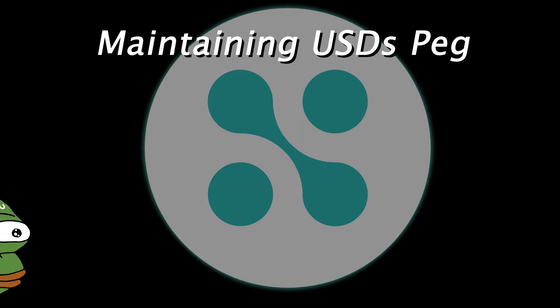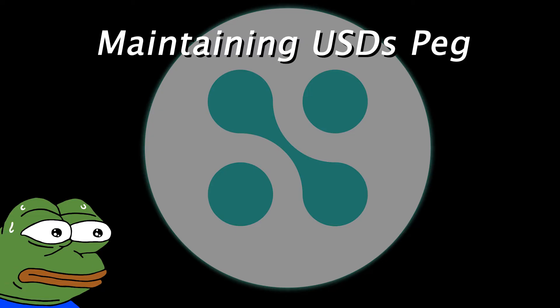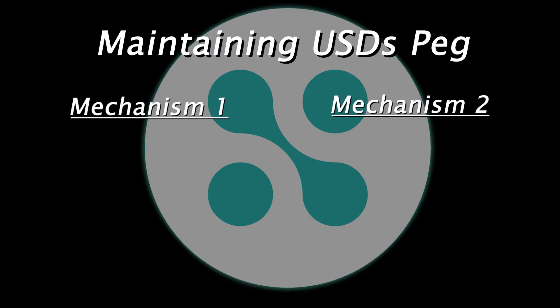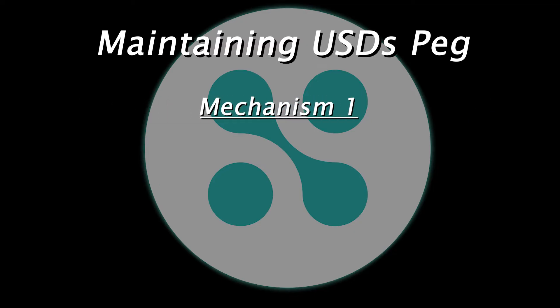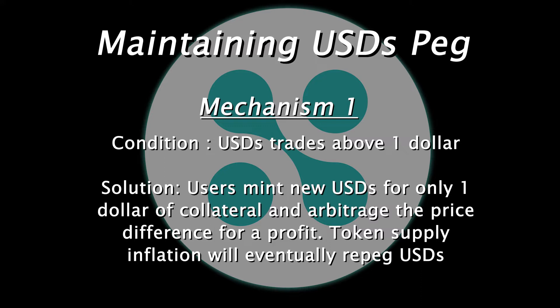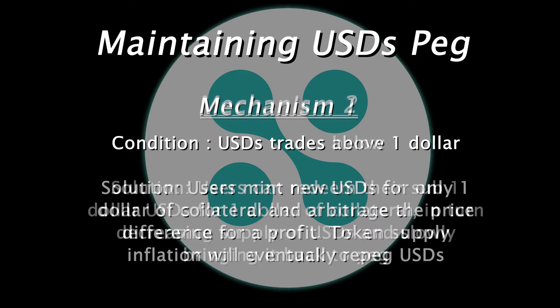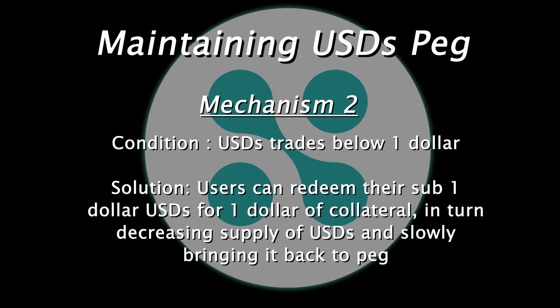So how can users ensure that USDS will always remain pegged? There are two main mechanisms that ensure that USDS will maintain its peg. First, if USDS is trading above peg, users can mint new USDS for $1 worth of collateral, then sell that USDS at a profit relative to the collateral they deposited. This token supply inflation will naturally bring the price down, re-pegging the asset. If USDS is trading below its peg, users can redeem USDS for $1 of collateral, in turn burning the supply and slowly bringing the price back to peg.